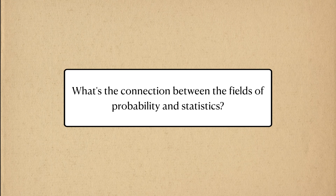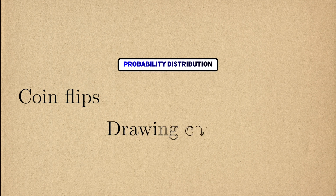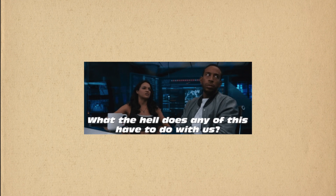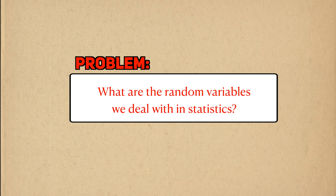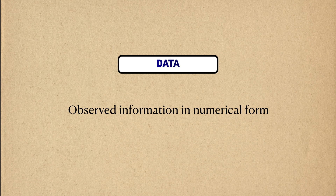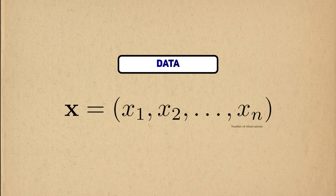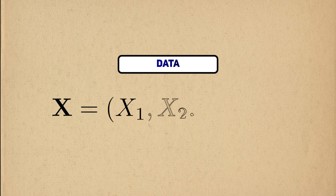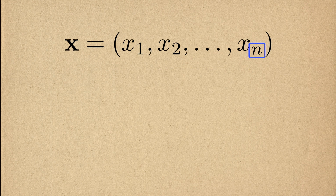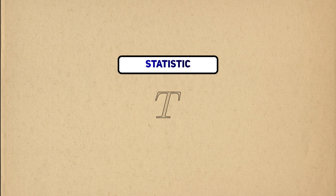Let's talk about the connection between probability and statistics. They're very often paired together, but the distinction between them is not always made clear. When people first start learning about probability distributions, they're grounded in real-world examples like the dice I mentioned. These are good for picking up the concept of random variables, but it doesn't help explain why we statisticians would bother to learn about them. What are the random variables we deal with in statistics? The first major one is the dataset. Data is a really general term, but I'll define it as observed information in numerical form. A dataset is just a collection of observed random variables. A dataset is observed, so we usually denote it accordingly. The number of observations, or sample size, is usually denoted with n.